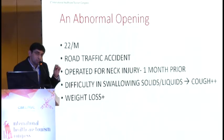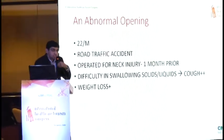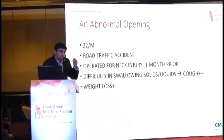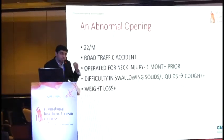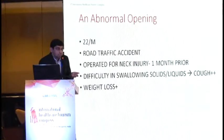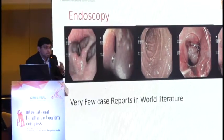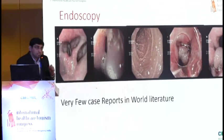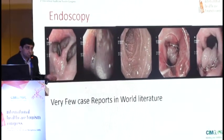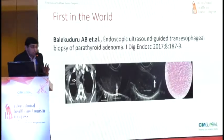A surgeon operated, and after that he developed a tracheoesophageal fistula — a communication between the windpipe and the foodpipe. Whenever he swallows, he has a cough because food or water enters the windpipe. What does an endoscopist do? He can close it from the endoscopy side by placing a clip — this is called an Ovesco clip, which is the latest, and very few case reports exist.